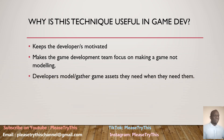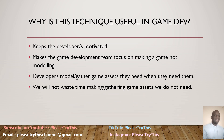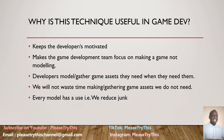Developers model or gather assets when they need them, at the time they need them. When you're at a stage and you're about to cross the river, you say, 'I need a tree here' — you model the tree. We will not waste time making or gathering assets we do not need. Every asset has a purpose and a use; we reduce junk because we don't waste time modeling assets we do not need.